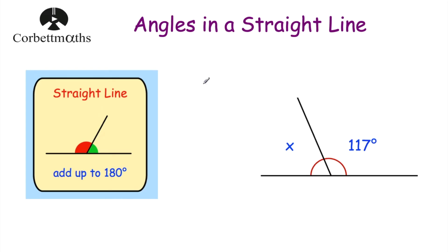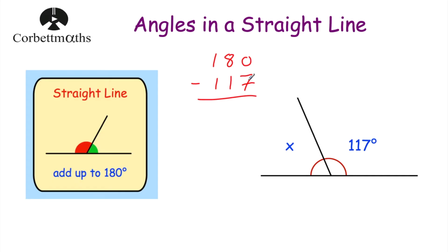Let's have a look at the next example. This time we've got a straight line, and we've got x here, and we've got this obtuse angle of 117 degrees. To work out the size of angle x, we'll take 117 degrees away from 180, and what's left will be x. So 0 take away 7 we can't do, so we're going to need to borrow — cross off the 8, call that a 7, and now that's 10. 10 take away 7 is 3, 7 take away 1 is 6, and 1 take away 1 is 0. So that means x is 63 degrees.